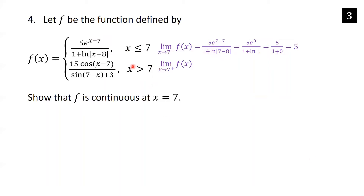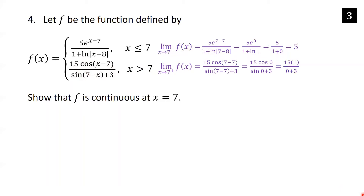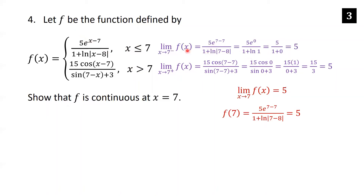For the right-hand limit as x approaches 7, we use the second piece. Plugging in x=7: cos(7−7) = cos(0) = 1 and sin(7−7) = sin(0) = 0, so we get 15·1/0 plus 3 — wait, sin(0) = 0 so denominator is 0+3 = 3, giving 15/3 = 5. Both limits equal 5, and f(7) from the first piece also equals 5, confirming continuity at x=7.